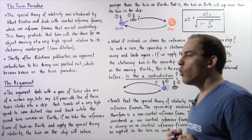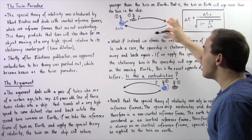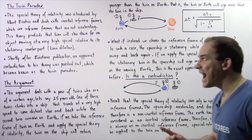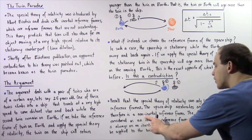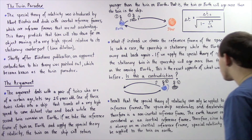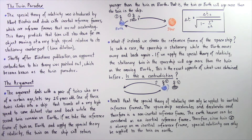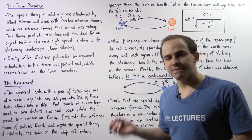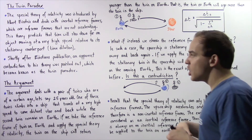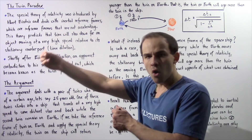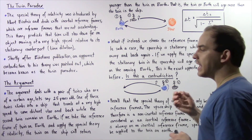The spaceship accelerates when it begins its trip, accelerates when it turns around, and decelerates when it returns to Earth. This means the spaceship is not an inertial reference frame — it is a non-inertial reference frame. The Earth, on the other hand, can be considered an inertial reference frame. Therefore, since twin two is always in an inertial reference frame, the special theory of relativity can only be applied from the Earth's perspective. That means the twin on Earth ages more, and the twin in the spaceship ages less.